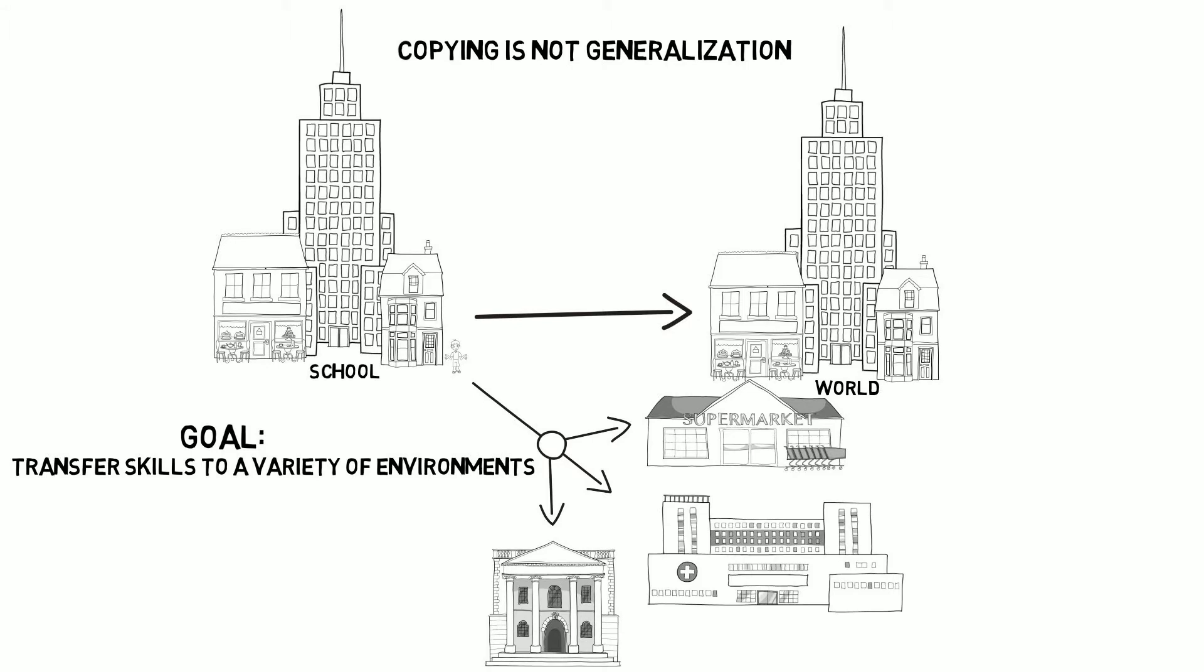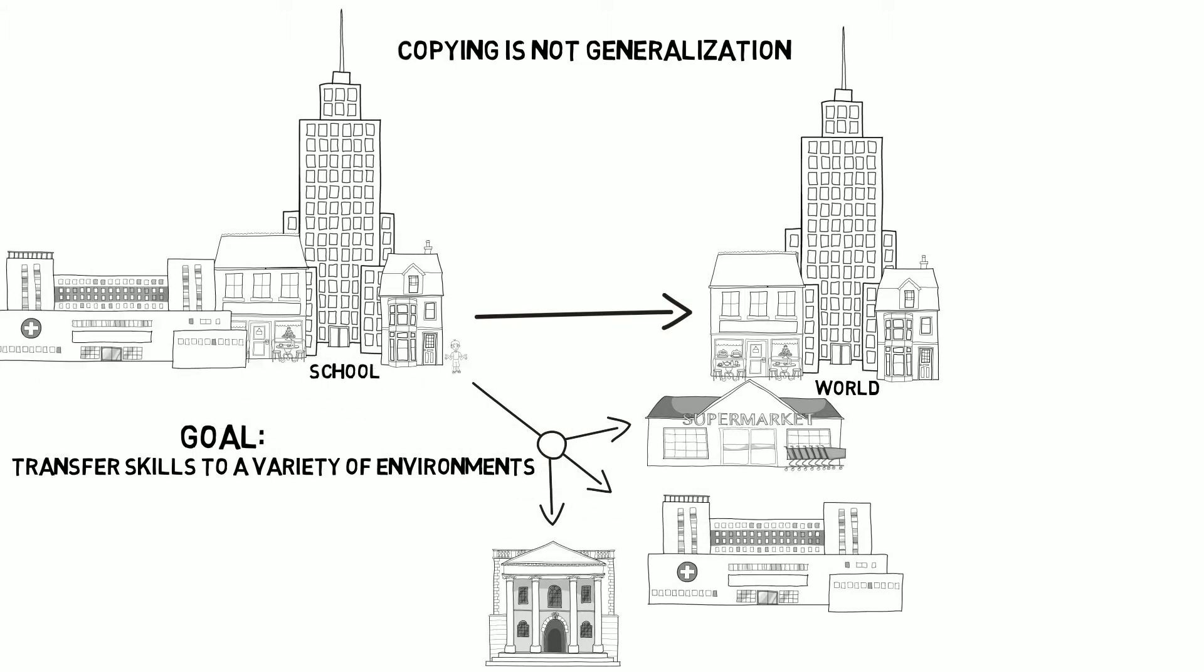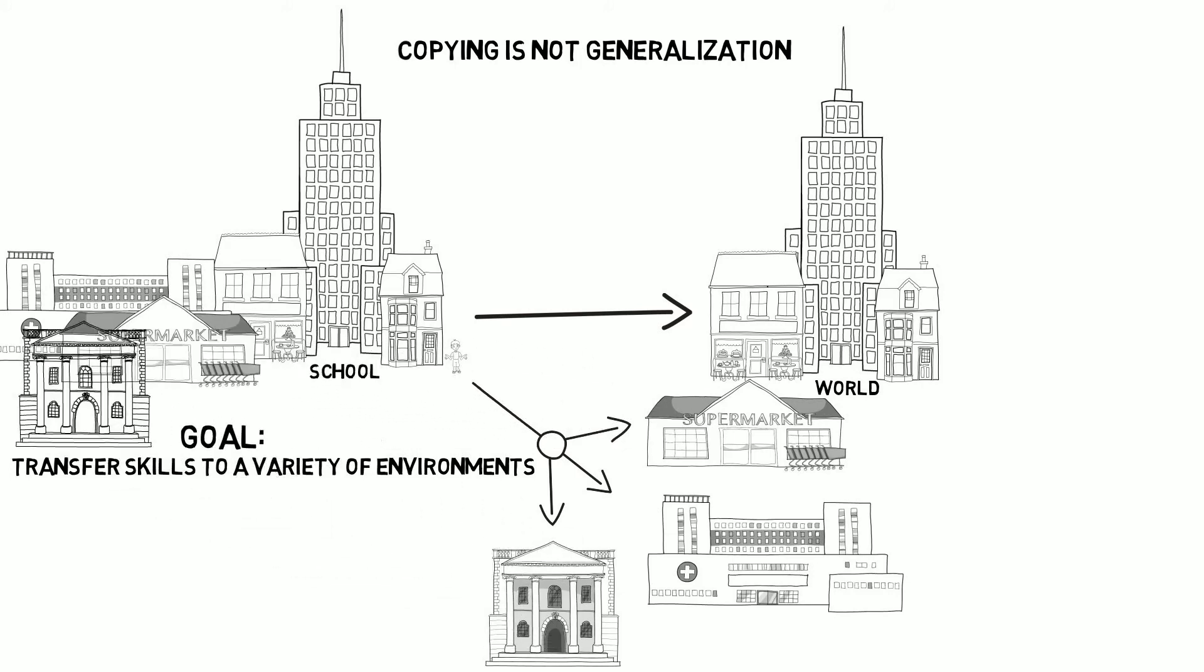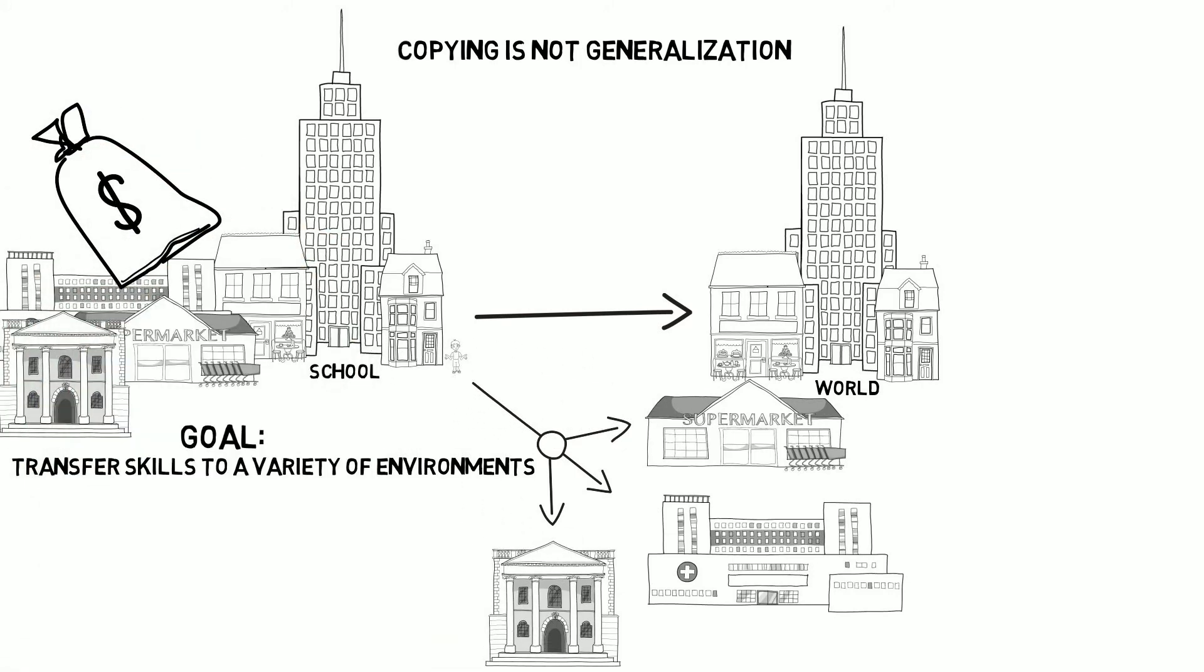Mastering a skill in a singular bank or grocery store built in an autism-specific school does not guarantee that an individual will transfer those skills to a variety of banks or grocery stores. Perhaps schools would have to provide at least two types of each setting. That proposition brings up the issue of costs.